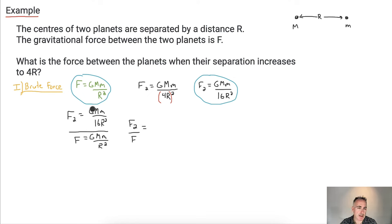So F2 over F. What happens when you have a fraction divided by a fraction? You multiply by the reciprocal of that. So the top stays the same, still G m m over 16 r squared. But then I multiply that by the reciprocal of this. So I flip it. This becomes r squared over G m m. And if you look carefully, you'll see that lots cancels out. The G m m's cancel out. The r squared's cancel out. And all I'm left with is F2 over F equals 1 over 16. In other words, I can say then that F2, the new force is going to be F over 16.